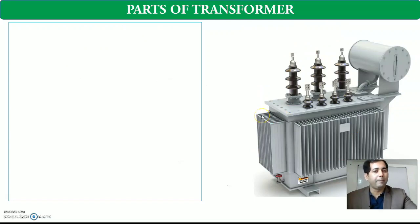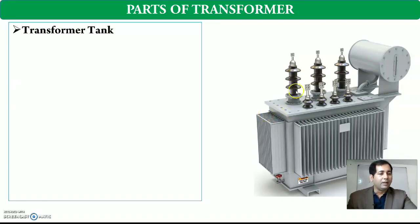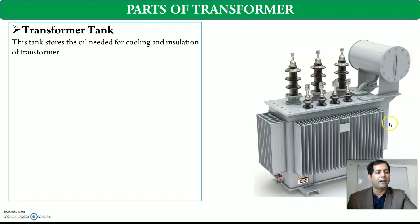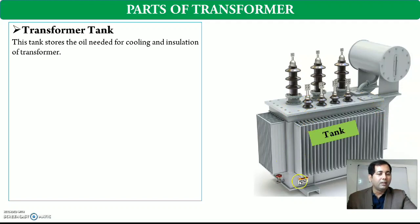The next parts of transformer: we have covered core and winding. The next is the transformer tank. The need of the transformer tank — the core and winding are the two most important parts. For an oil-cooled transformer, we need a tank because the oil is contained inside it. The tank is the body in which the core and winding are mounted and placed. This is called the transformer tank.